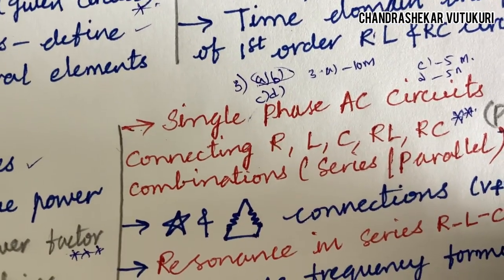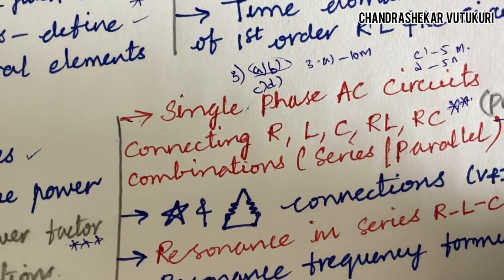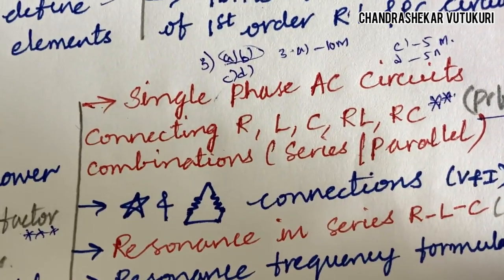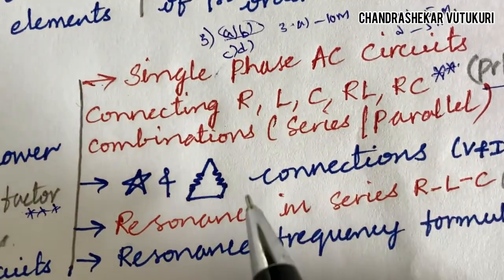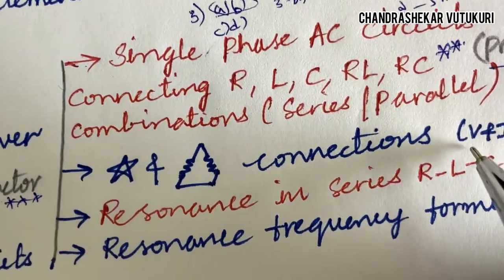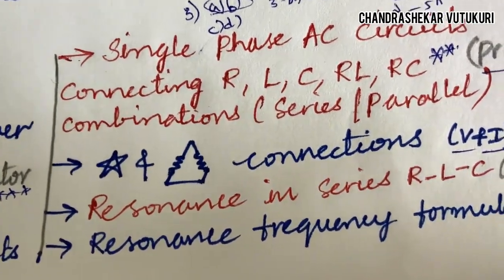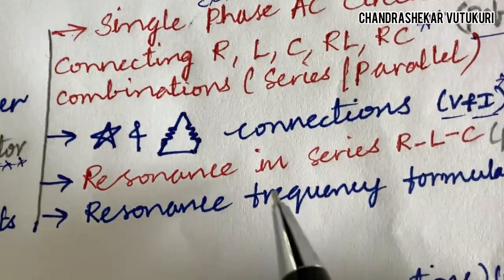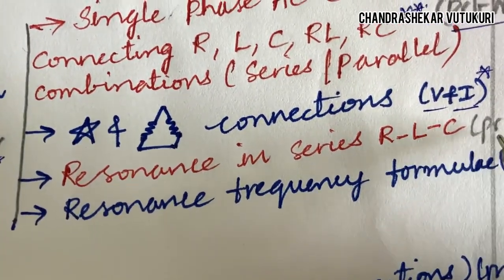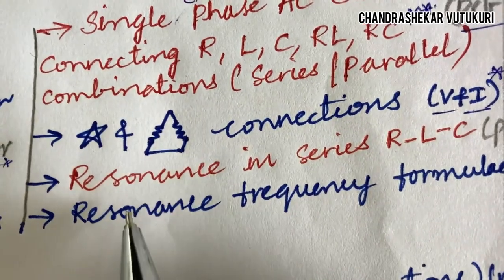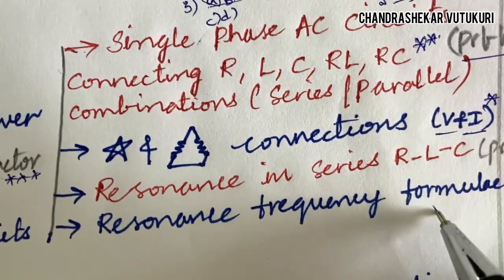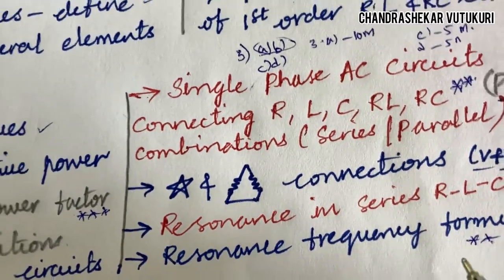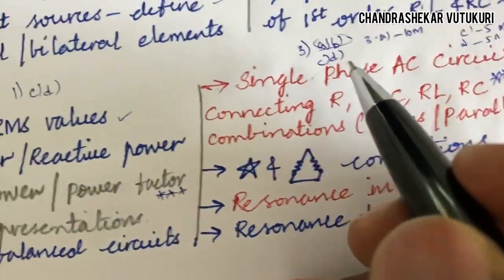I hope you have gone through my channel for the R22 question paper pattern video — if you haven't, please watch it immediately. Star and delta connections with voltage and current combinations need to be worked out, and this is one of the topmost questions. Resonance in series RLC, the resonance frequency formula, and related problems may also be a short as well as a long question, coming to unit 2.